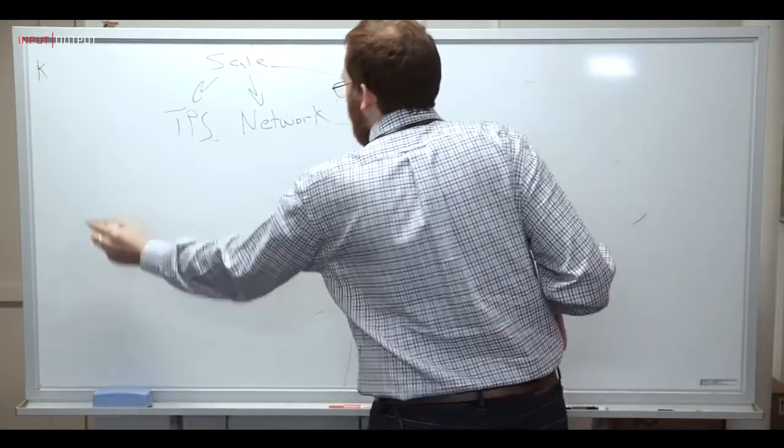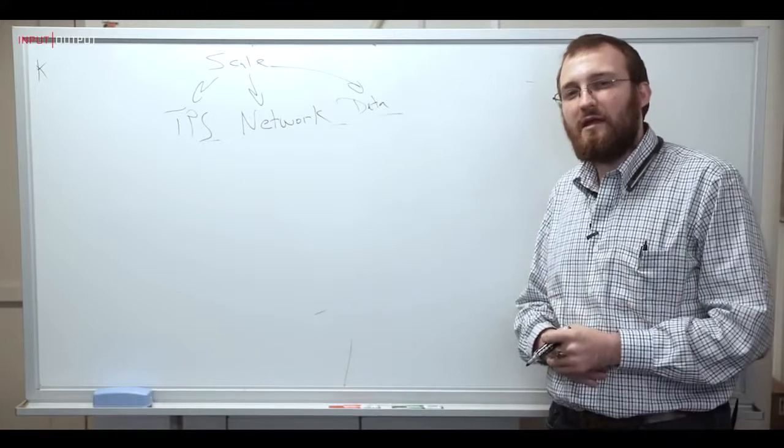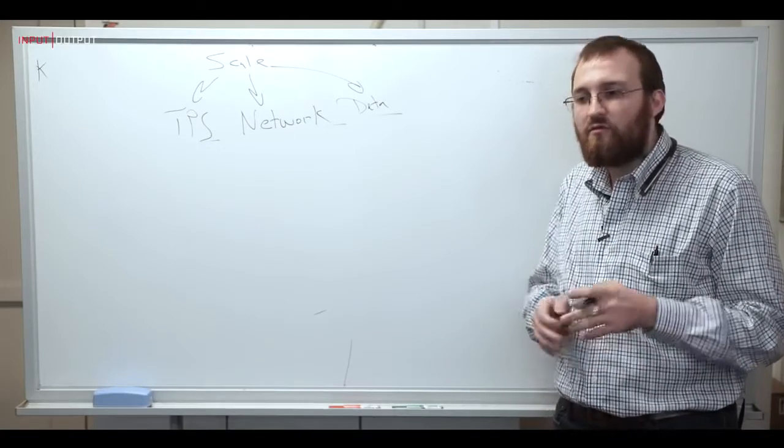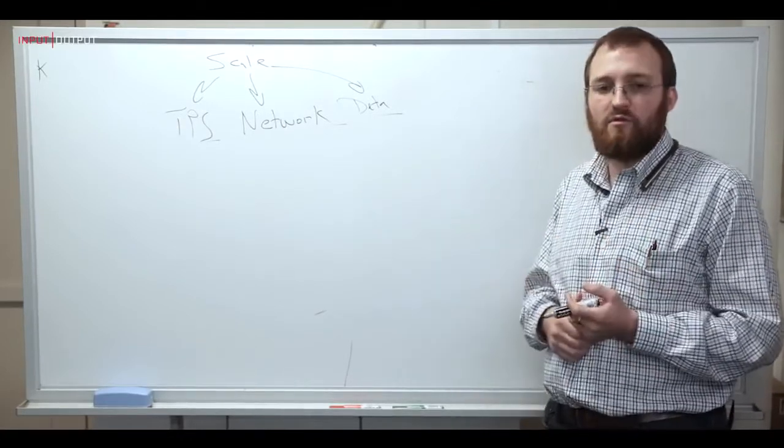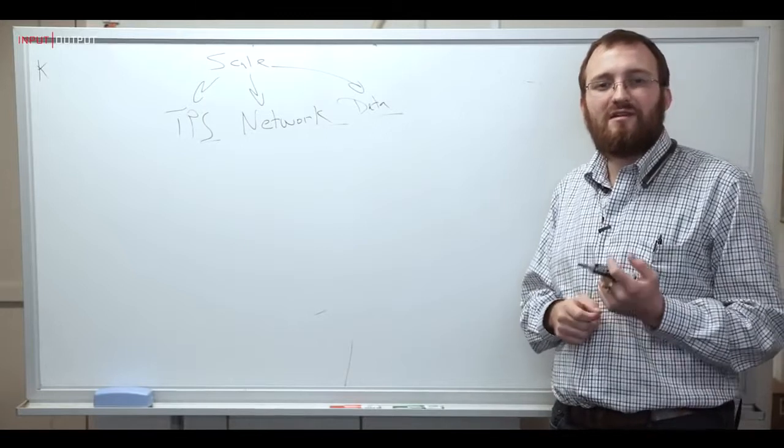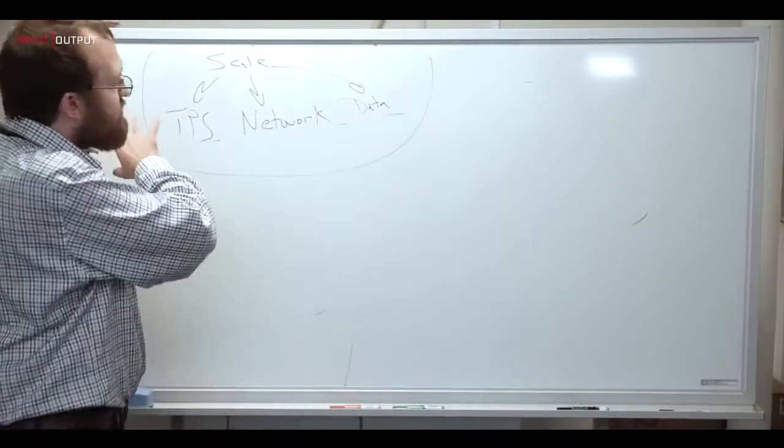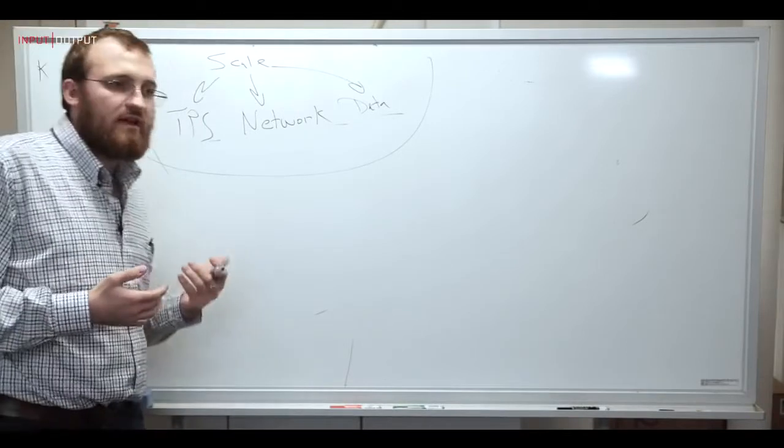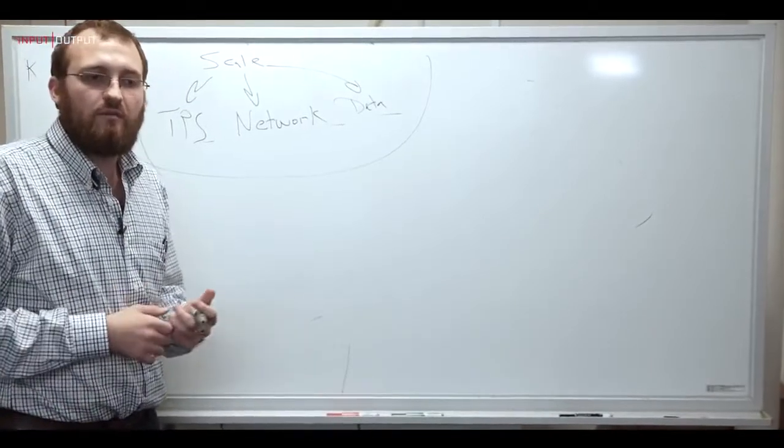And then finally, there's this notion of data scale. So blockchains store things hopefully forever. And so every time you put a transaction in, regardless if it's relevant or not, it ends up in the log. And as you have more and more transactions per second, you need more and more data. And as a consequence, blockchains will grow from megabytes to gigabytes, to terabytes to petabytes, and potentially even exabytes.